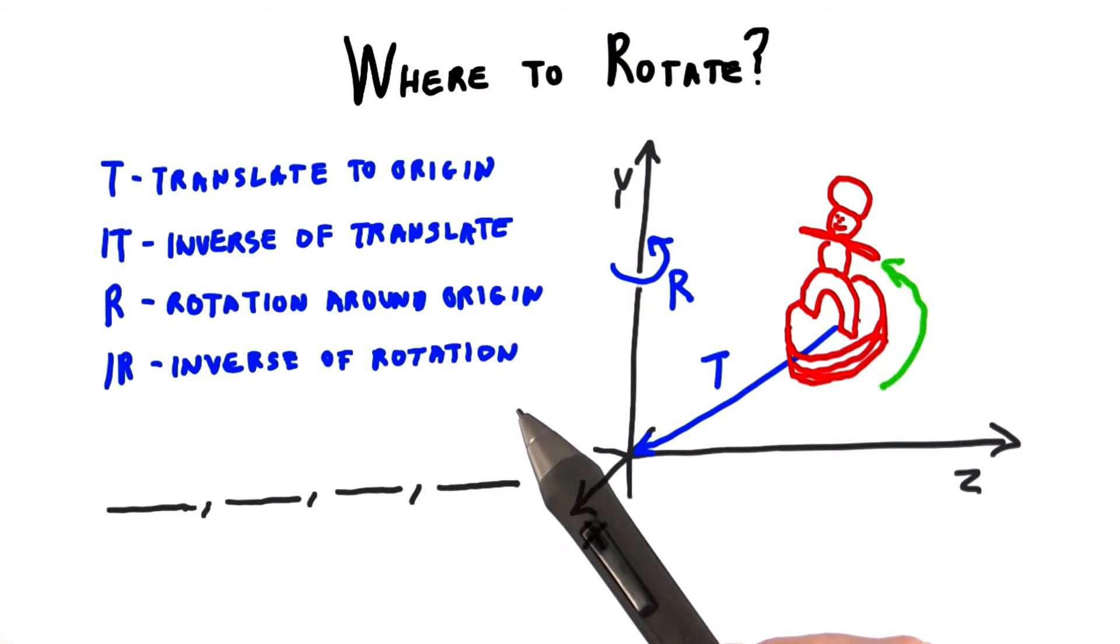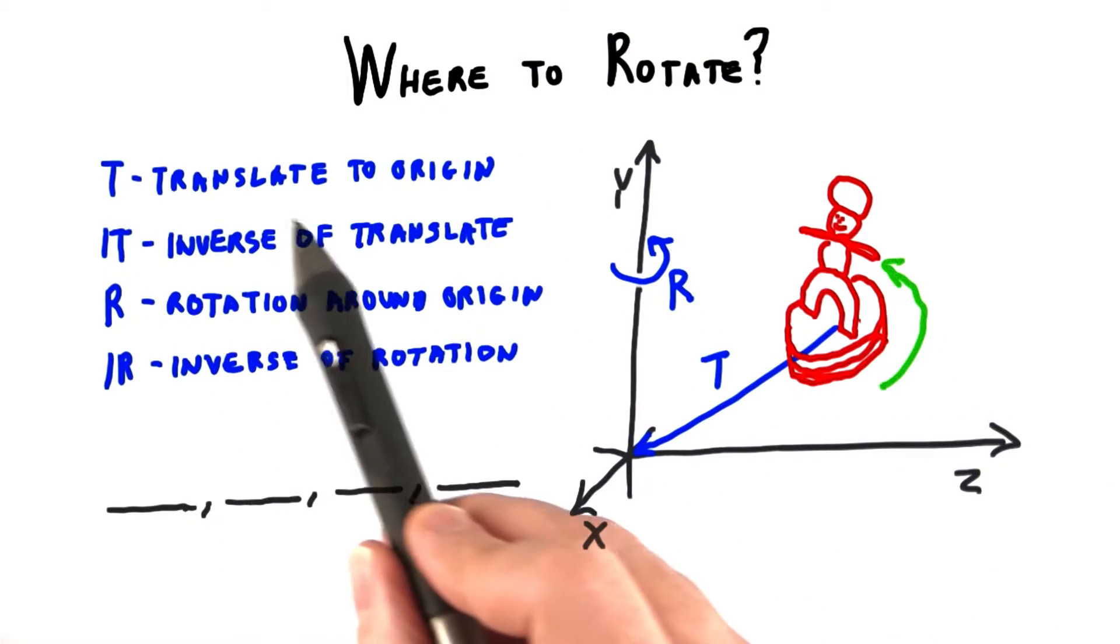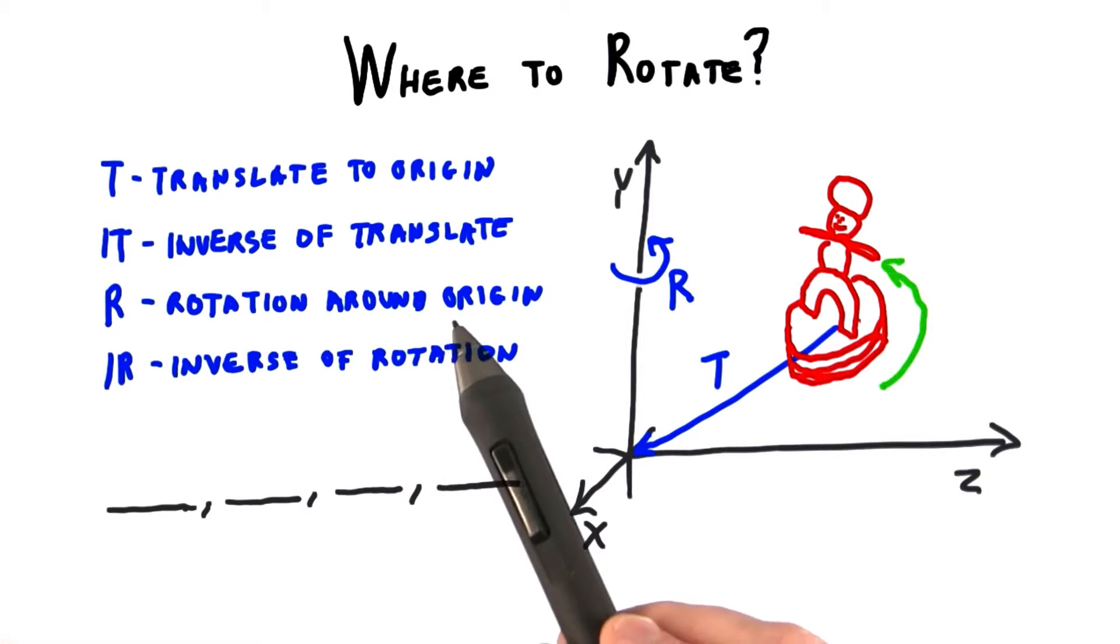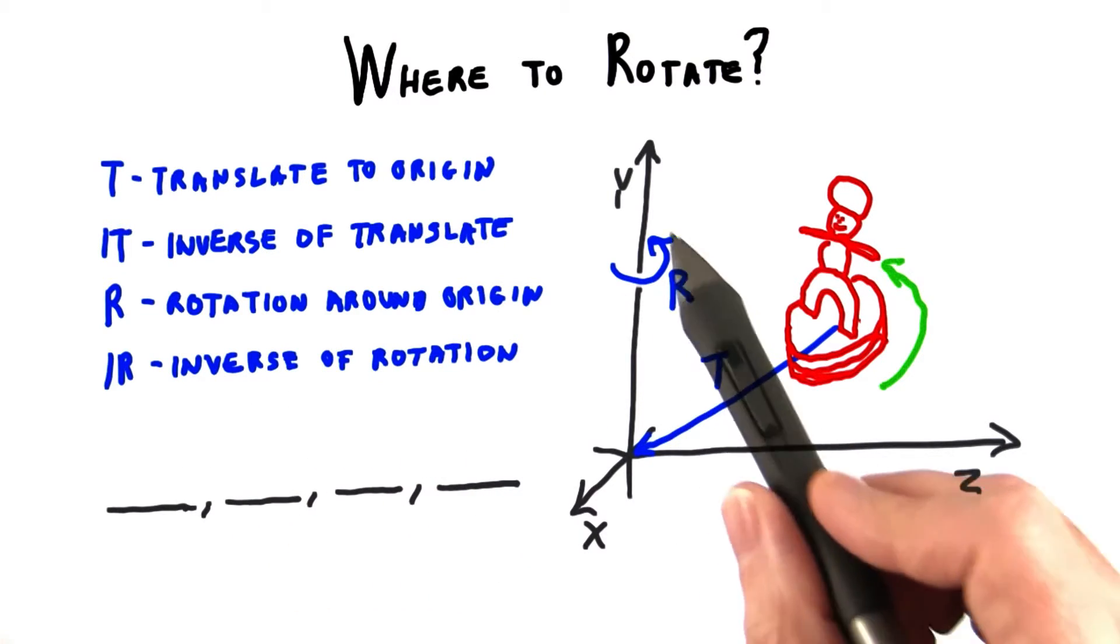You have a few matrices at hand to perform the task. You're given a translation matrix that would move the center of the model's base to the origin. You also have a rotation matrix that will rotate the model or anything else around the y-axis.